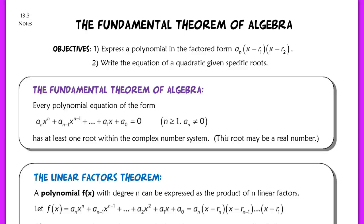Hi guys, this lesson is for section 13.3. We're going to be talking about the fundamental theorem of algebra. Our objectives for today are to express a polynomial in the factored form where we have a constant times two linear factors with lead coefficients of one. We are also going to be writing the equation of a specific quadratic using specific roots, finding a specific polynomial's equation for a quadratic.